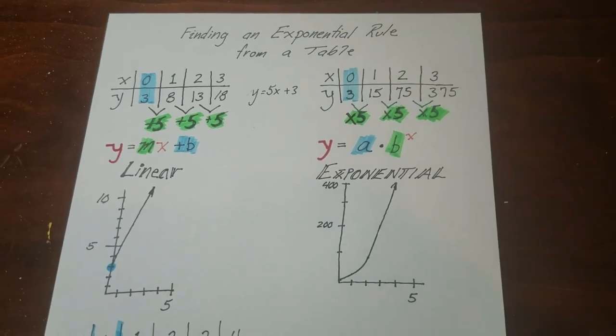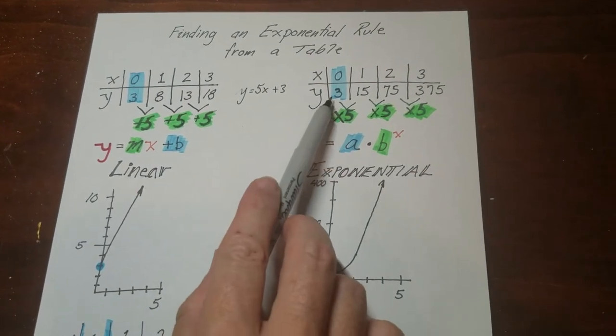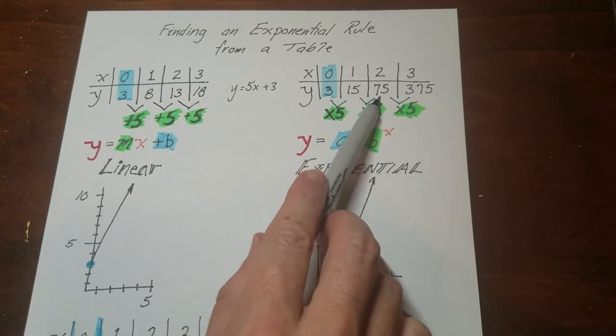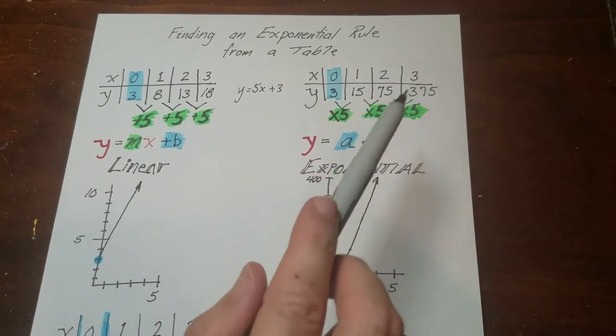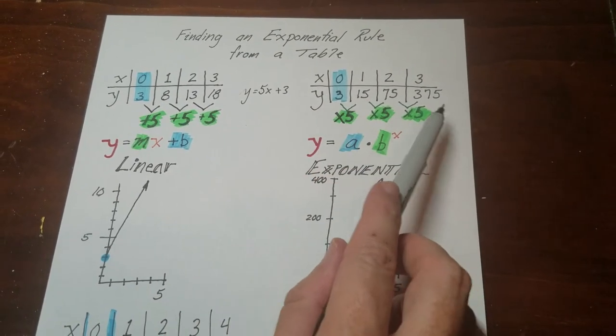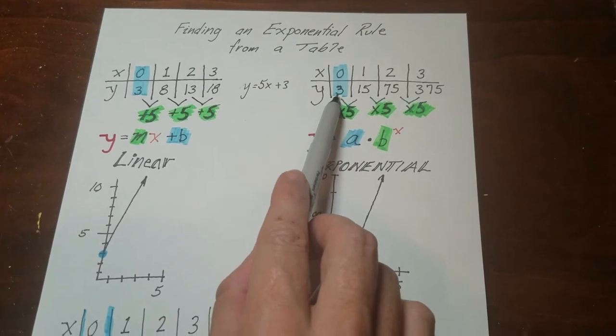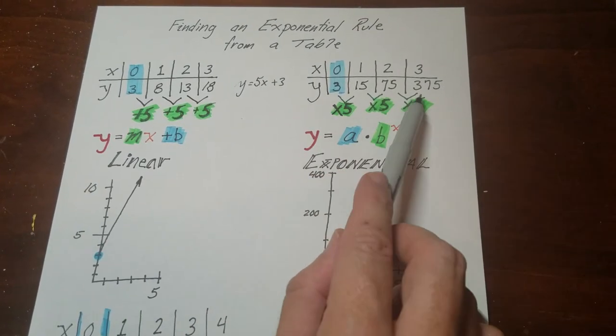Now on an exponential, you know it's not linear because if we look at these values here, 3, 15, 75, 375, it's jumping up by quite a bit. It's not a consistent number that we're adding or subtracting. It's actually multiplying.